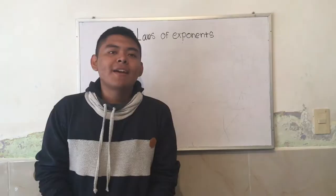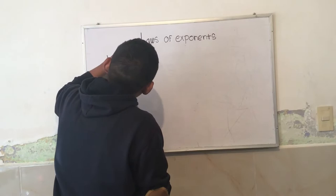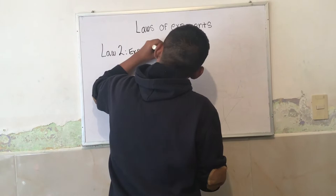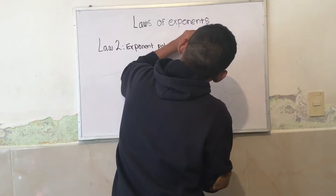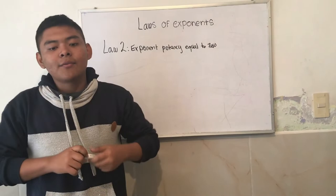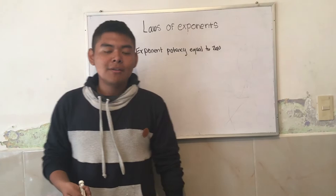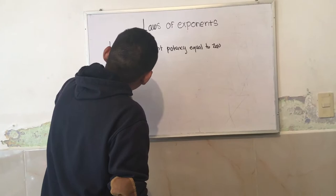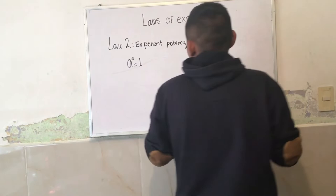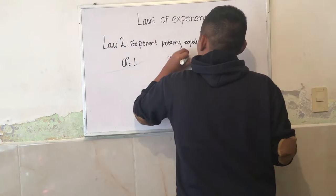Law 2: exponent potency equal to 0. This tells us that when the exponent is 0, if the base is non-zero, the result will be 1. That is, A to the 0 is equal to 1. For example, we have 20 to the 0 equal to 1.